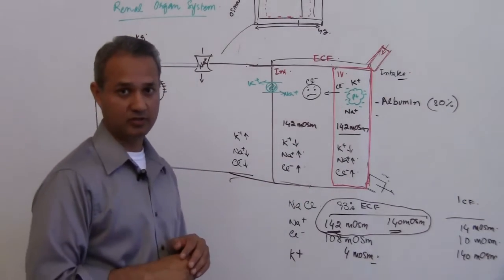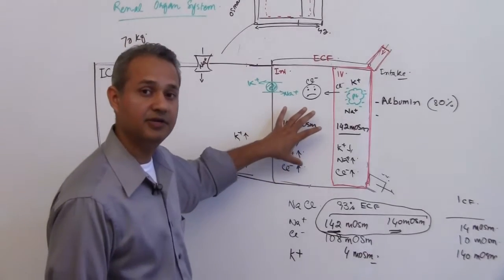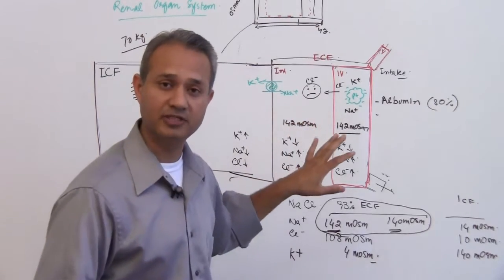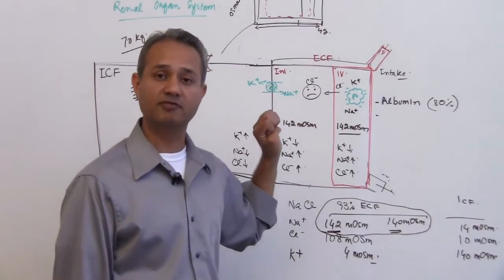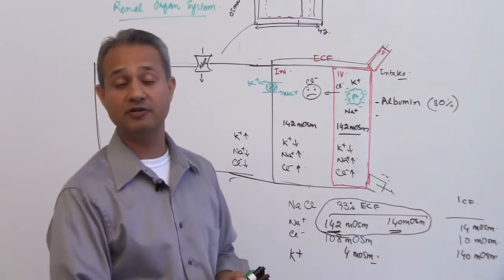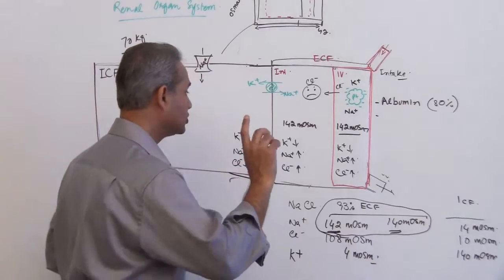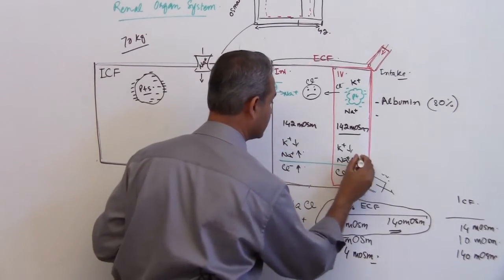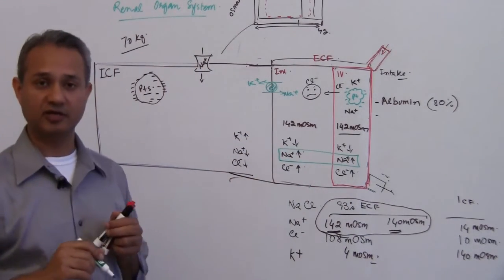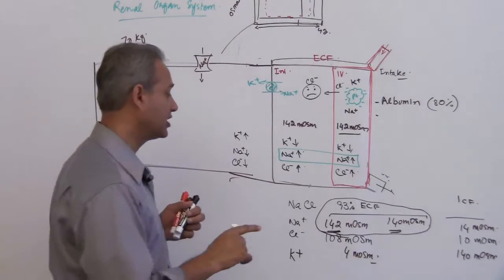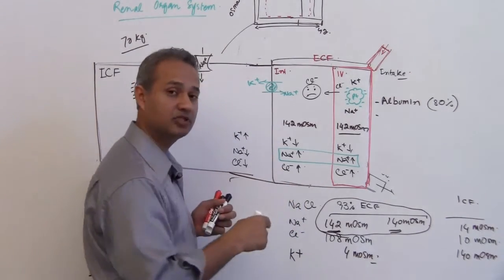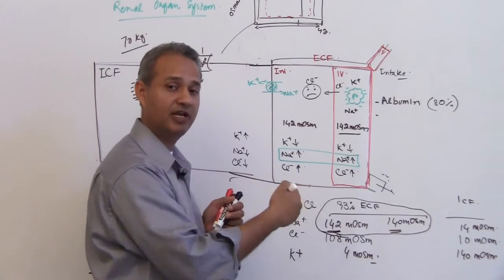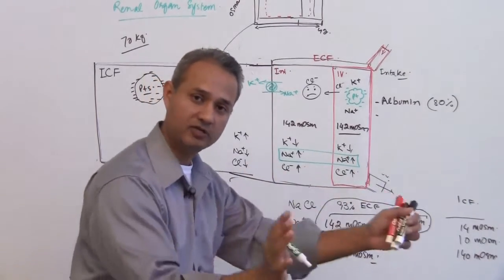Another very important thing to understand: osmolarity is established in the extracellular fluid. This is going to be a USMLE question — they would say if sodium is reduced what would happen. So sodium is the primary player for the osmolarity of the extracellular fluid. More precisely, sodium and chloride together, with the assumption that wherever we have sodium, chloride is going to be there as well.